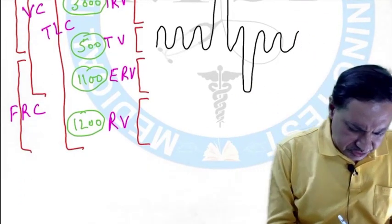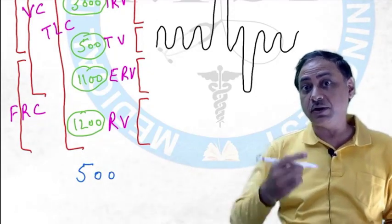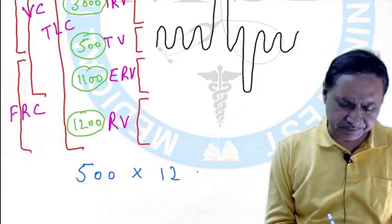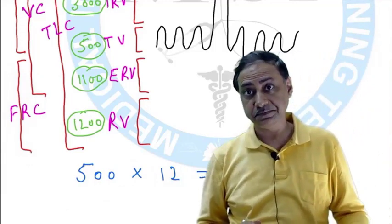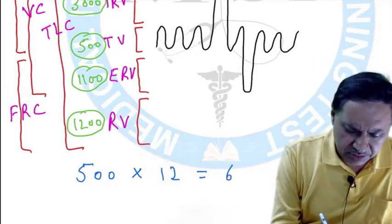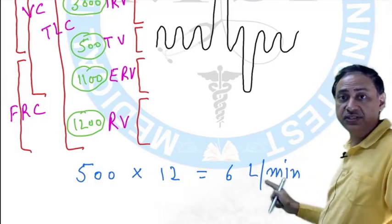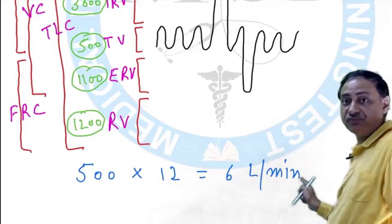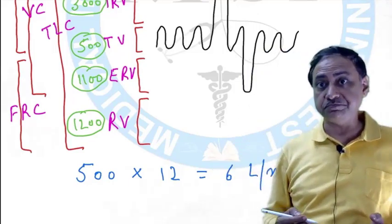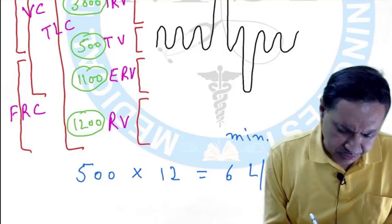Tidal Volume is 500 mL — normal in and out. 500 mL into Respiratory Rate of 12 breaths per minute gives 6 L per minute. What is this known as? This is known as Minute Ventilation.